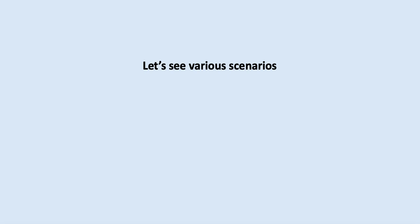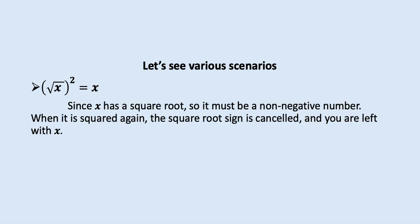The third scenario is relatively easy — we take the square root first and then square the result. This will always equal the variable involved, which must be non-negative. Since x is under a square root, it must be a non-negative number. When it is squared again, the square root is cancelled and you are left with the same variable. This is relatively simple.